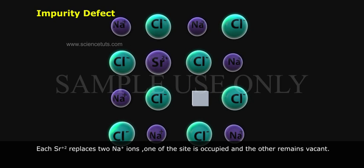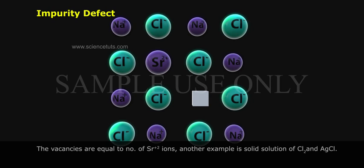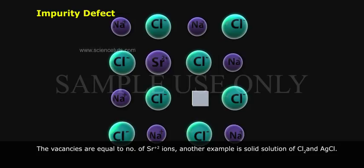Each Sr²⁺ replaces two Na⁺ ions. One of the sites is occupied by Sr²⁺ and the other remains vacant. The vacancies are equal to the number of Sr²⁺ ions. Another example is the solid solution of Cl₂ (chlorine) and AgCl (silver chloride).